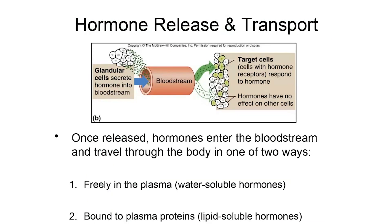Once hormones are released, they get into the blood and the blood transports them to the cells of the body. Certain cells are considered target cells for a hormone because they have a receptor for it; all other cells are exposed to the hormone but don't respond if they don't have the right receptor. Both water-soluble hormones — our non-steroidal hormones — and lipid-soluble hormones — our steroid hormones — are released from endocrine organs and make their way into the bloodstream.